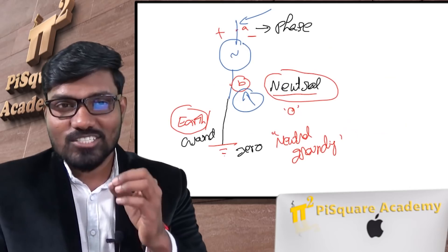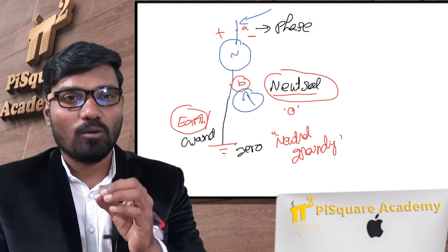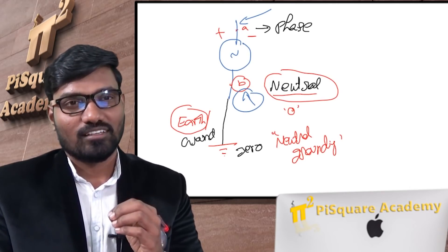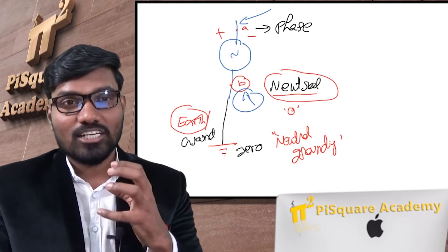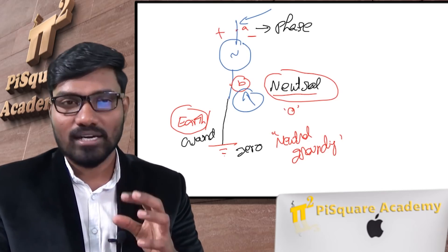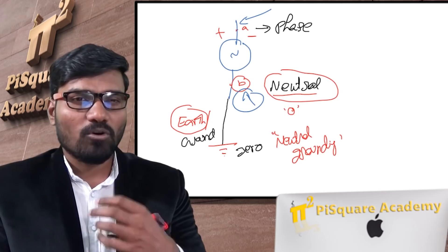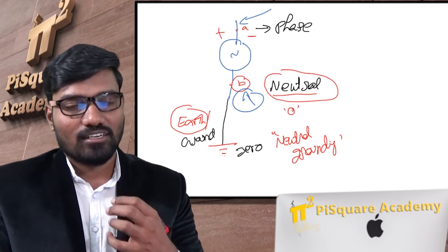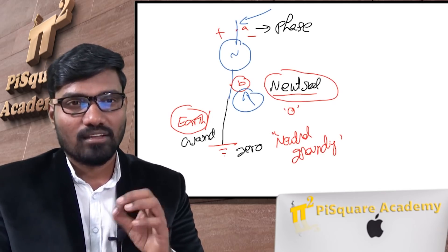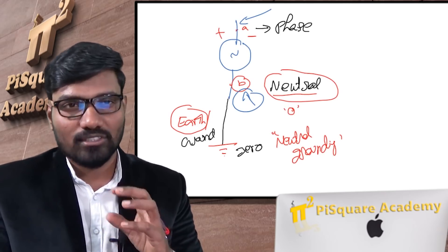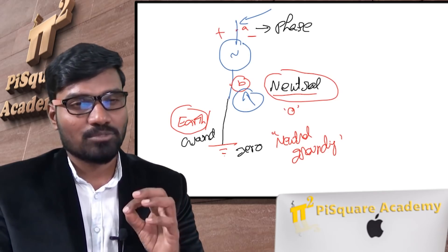Chassis grounding is for the protection of the operator — to protect the person from getting a shock under abnormal conditions. If you want more details on how this protection works and how it differs from a fuse, there is already a video on this — check the links in the description.